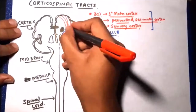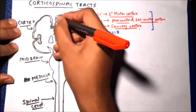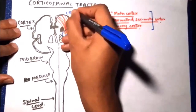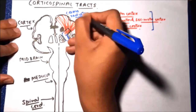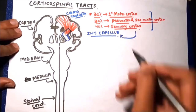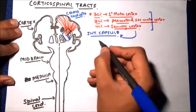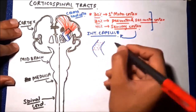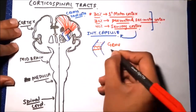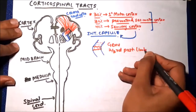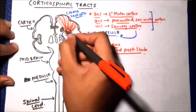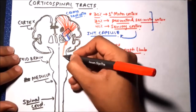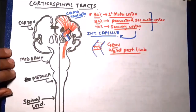These fibers emerge from the cortex and form a structure called the corona radiata above the internal capsule. They then converge at the internal capsule. The area of the internal capsule occupied by these corticospinal fibers is the genu and two-thirds of the posterior limb of the internal capsule.